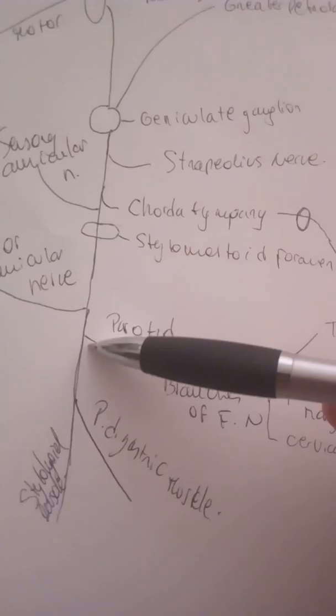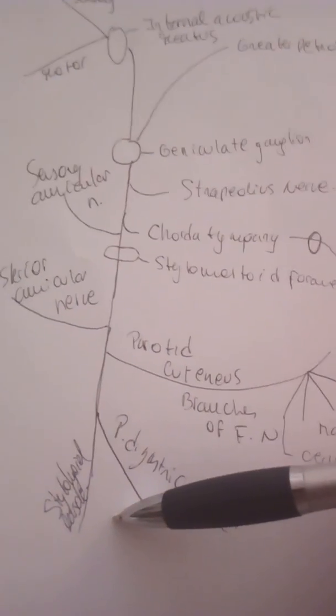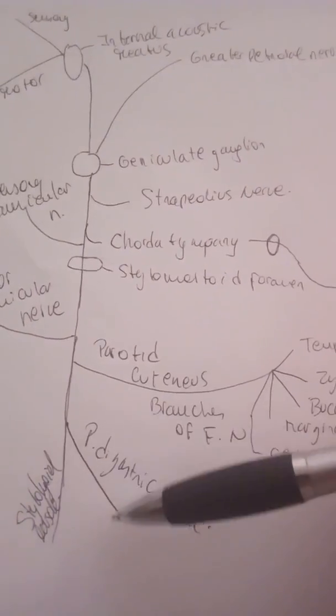Then after that we'll have two small branches for the posterior digastric muscle and the stylohyoid muscle. Sometimes they arise as a common branch.